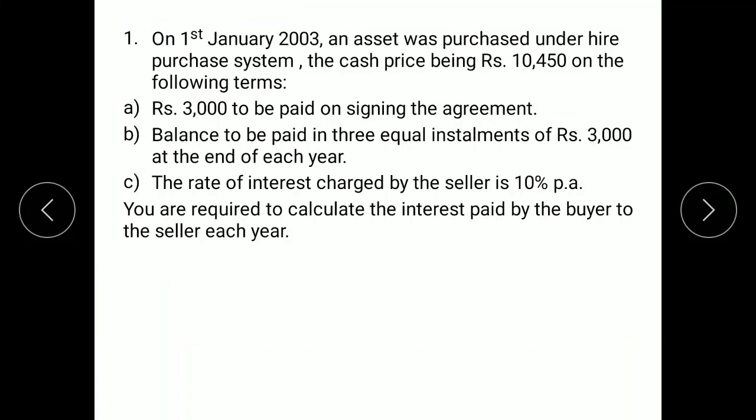In the first question we are given details on the cash price of the asset, the advance paid, installment amounts, and the rate of interest. So in this question all the information is already given. This means it is the first method, wherein the cash price as well as the rate of interest is given. But here we should identify whether interest is included in the installment or interest is not included in the installment.